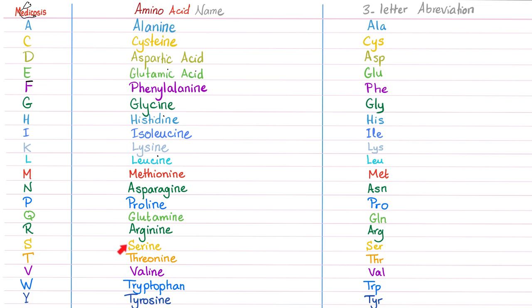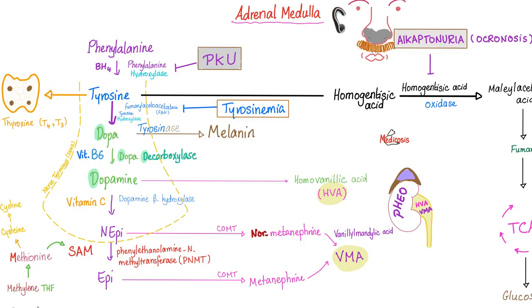Amino acids — each one has a name, a one-letter abbreviation, and a three-letter abbreviation. You need to memorize all of this. Do you remember the story of the adrenal medulla? Phenylalanine → tyrosine → dopamine → norepinephrine → epinephrine. You see that? That is SAM. SAM comes from methionine. SAM is a methyl group donor. It gets the methyl group from methionine, because methionine contains methyl — it also contains sulfur.